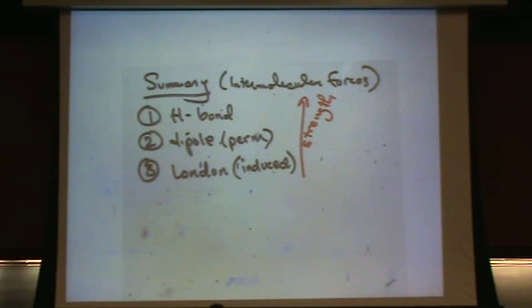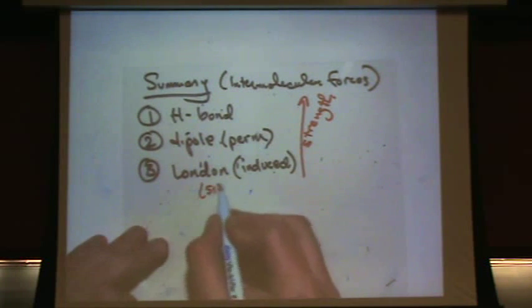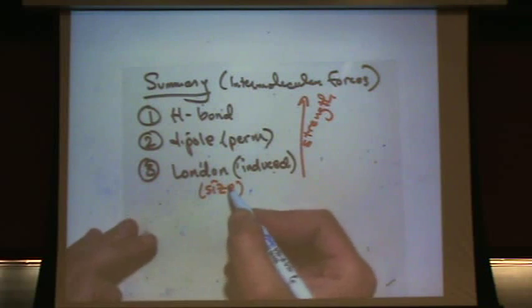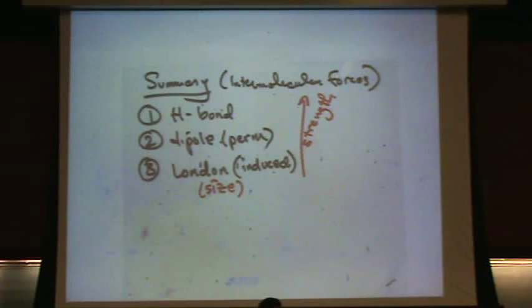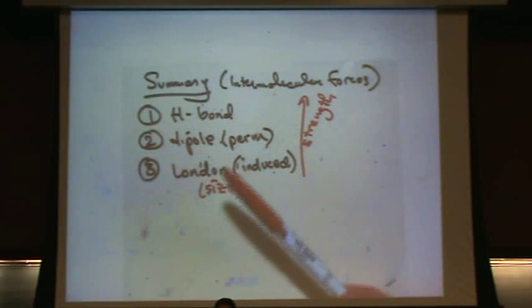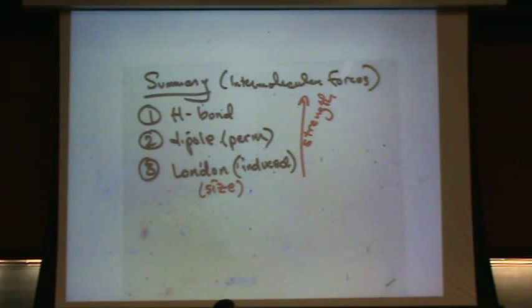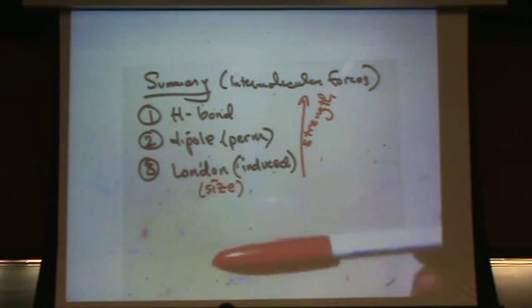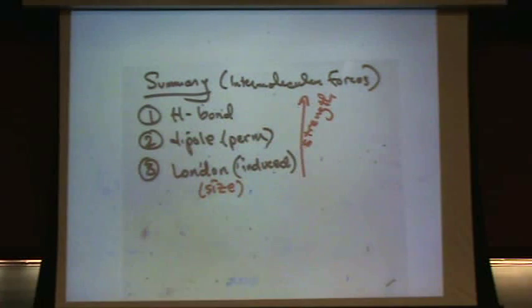There is one way that London can overtake the H-bond. How's that? Yeah, size. As it gets bigger, the strength gets larger. That's only for London. Which one of these appear in all molecules? London. Usually what we want you to do is determine the most dominant one.